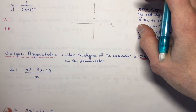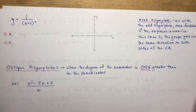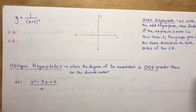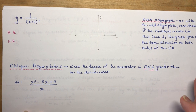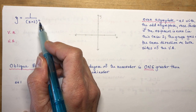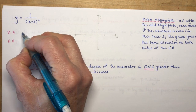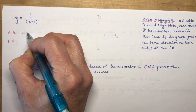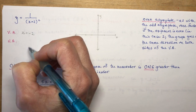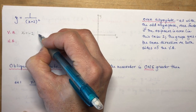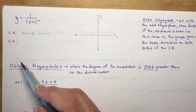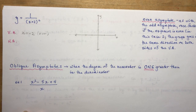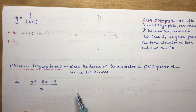Here's another vertical asymptote example — this time with an even asymptote. The odd asymptote had a degree of 1; this one has a degree of 2. The vertical asymptote is x = −2, and it is even. An even asymptote means the function goes in the same direction on both sides.